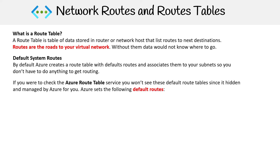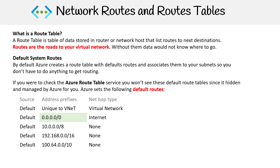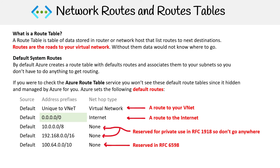There is actually a service called route tables, and you can type it up in the top of your Azure portal. But I couldn't find the route table managed by Azure — the reason is they just hide it from you. They have default routes for you: one to your virtual network, one to the internet, and some RFC ones for specific use. If you turn on specific networking services, a few other routes would be applied as well.